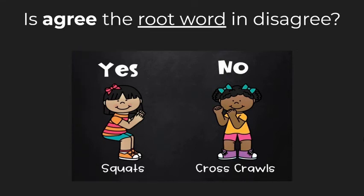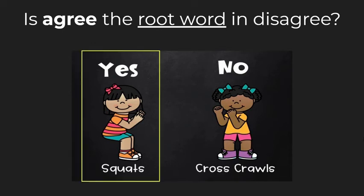Is agree the root word in disagree? Think about it — the prefix would have been added to the word agree. The answer is yes — agree is the root word, and dis is a prefix that was added to agree to mean that you do not agree with something.